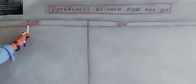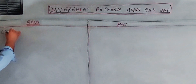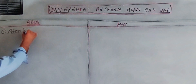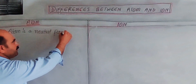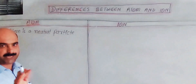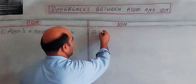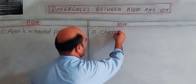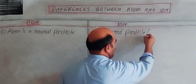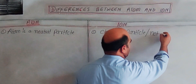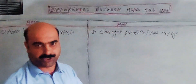The first difference is that an atom is a neutral particle — it is a chargeless particle. An ion, on the other hand, is a charged particle. An ion has a net charge; it can be either positive or negative.